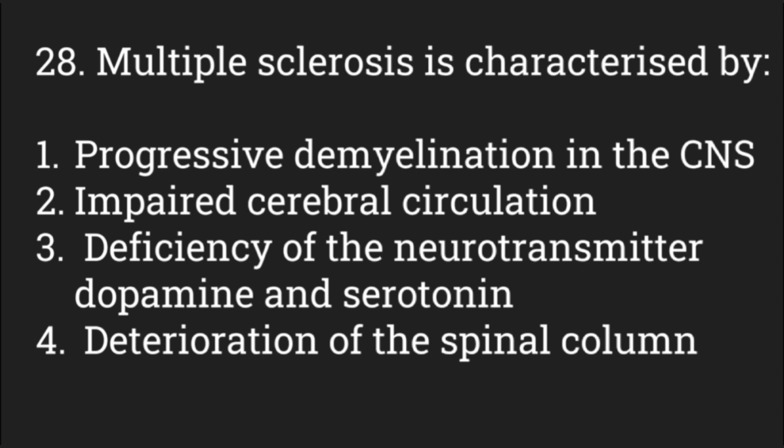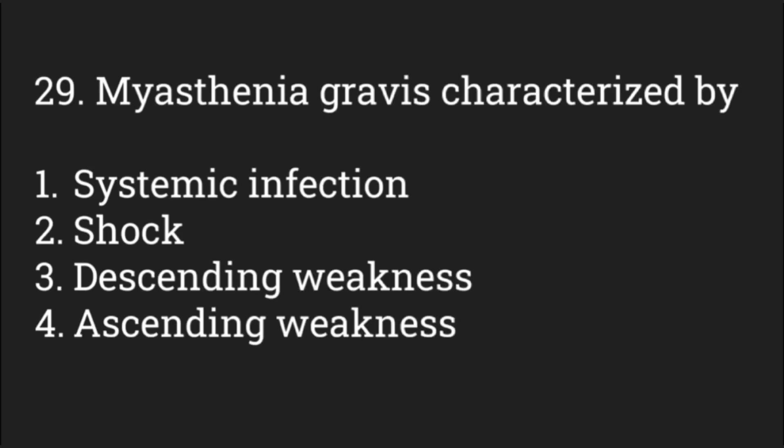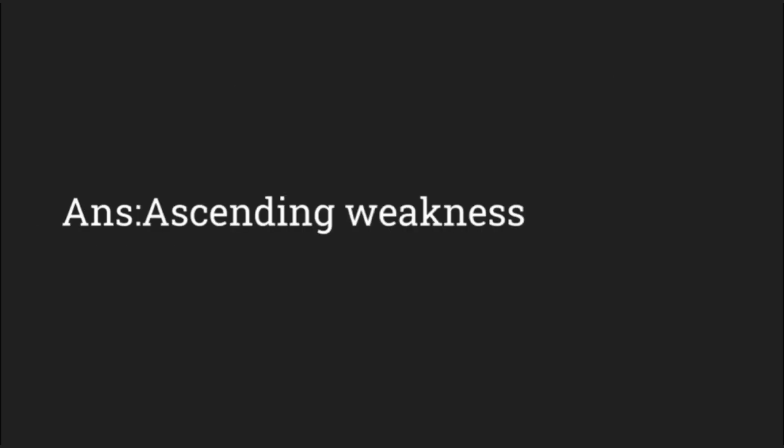Multiple sclerosis is characterized by — options: progressive demyelination in the CNS, impaired cerebral circulation, deficiency of neurotransmitters dopamine and serotonin, or deterioration of the spinal column. The answer is progressive demyelination in the central nervous system.